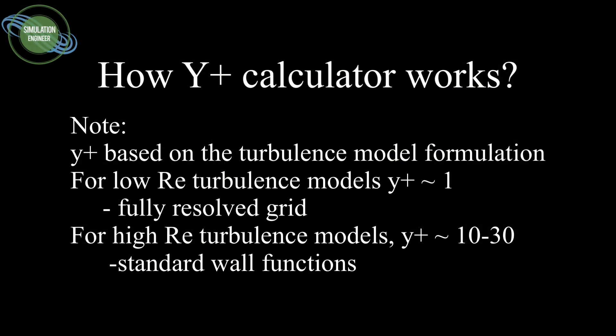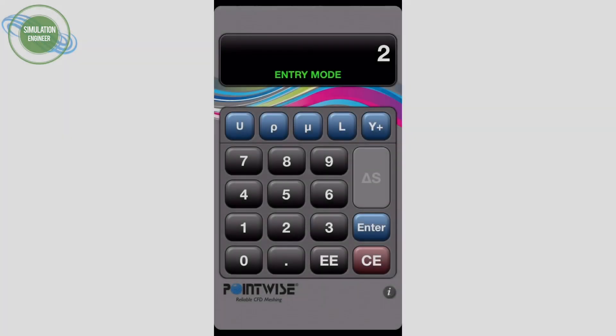Make sure for low Reynolds number turbulence models your y plus is around one or less than one. For high Reynolds number turbulence models, y plus has to be in the region of 10 to 30. The rest is taken care of by the standard wall functions for your turbulence model.